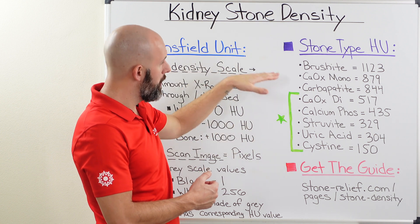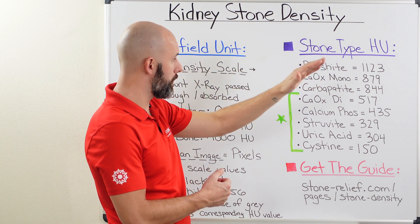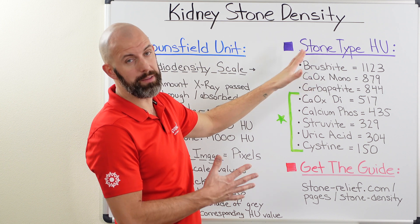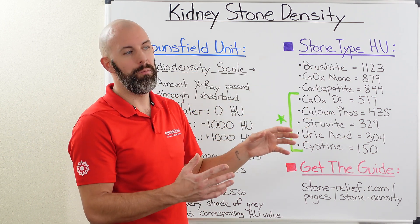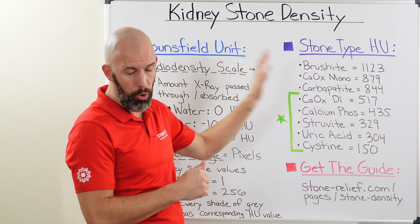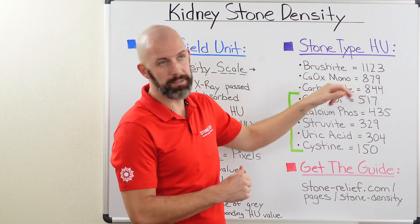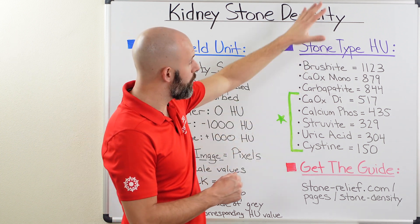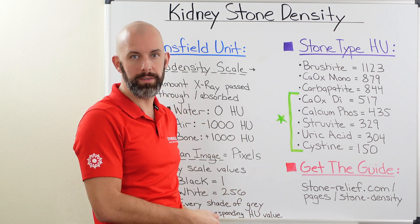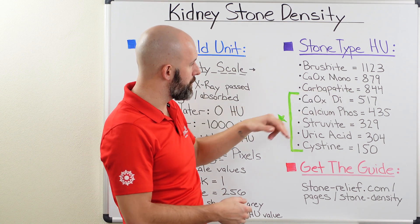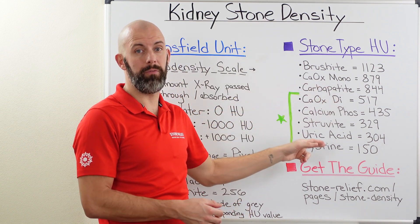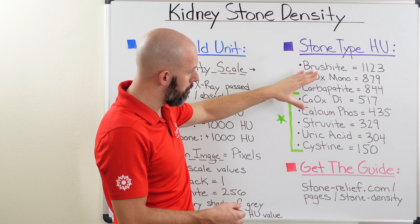From top to bottom: brushite stones are the most dense with an HU value well over 1,000. Calcium oxalate monohydrate — and there are two types of calcium oxalate stones — is the most prevalent stone in the United States, coming in at around 879 HU, almost as dense as bone. These are average values, so it could be higher or lower depending on your individual situation. Carbapetite stones are at 844 HU. The rest, like calcium oxalate dihydrate, another type of oxalate stone, are all below 500 HU.